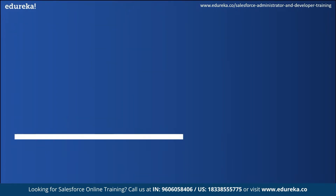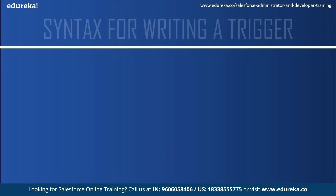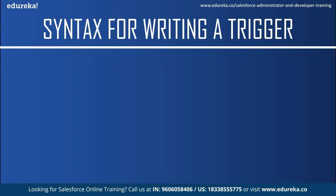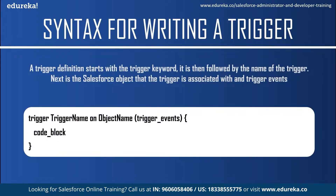The syntax for a Salesforce trigger is quite different from a class definition syntax. A trigger definition starts with the trigger keyword, followed by the name of the trigger — you can name a trigger anything you want. Next is the Salesforce object that the trigger is associated with, which could be leads, contacts, accounts, or any custom object. The Salesforce object is known as an sObject. Next is the trigger event, which you can fire for one or more events but they should be comma separated. Finally, the body of the code will contain the condition under which it fires.